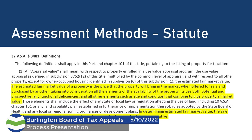Stepping back: what does the state statute say about how we're supposed to value properties for the grand list? We're supposed to set them at fair market value. Fair market value is the price that the property will bring in the market when offered for sale and purchased by another, taking into consideration all elements of availability of the property, its use — both potential and prospective — any functional efficiencies, and other elements such as age and condition. Basically, what somebody would typically buy it for and sell it for in the free market.